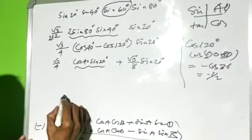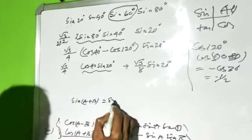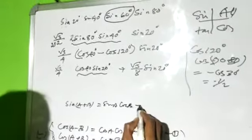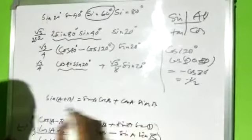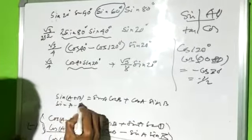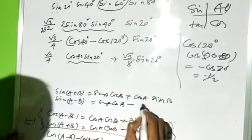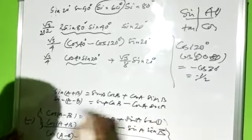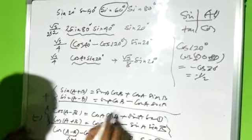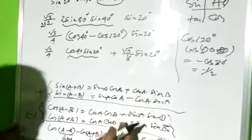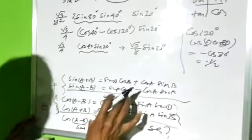Now using the sin addition formula: sin(A+B) = sinA·cosB + cosA·sinB, and sin(A−B) = sinA·cosB − cosA·sinB. If we add these two, the cosA·sinB terms cancel out, giving 2·sinA·cosB, meaning this part 2·sinA·cosB.